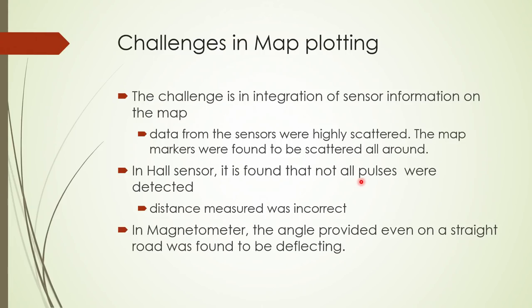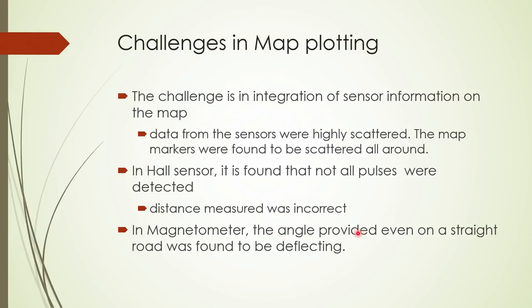There are challenges: integrating sensor information on the map is difficult in practice. The data from the sensors was highly scattered and map markers were found to be scattered all around. The hall sensor will sometimes miss pulses, causing distance errors — losing one pulse means losing some meters. The magnetometer was also fluctuating; even on a straight road the micro-tesla values were deflecting, making the angle measurement incorrect.